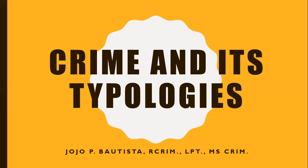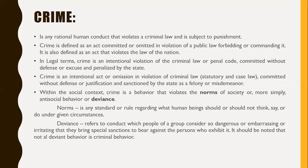Good day to everyone. Today our topic is all about crime and its typologies as part of our introduction to criminology. First, we will define what crime is, because there are different meanings. One definition is: crime is any rational human conduct that violates criminal law and is subject to punishment. Another is: a crime is defined as an act committed or omitted in violation of public law forbidding or commanding it.